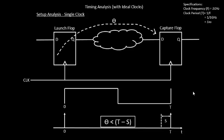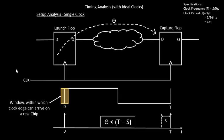Let's move on and bring in more practical scenarios. The next one we'll be talking about is something called jitter. This clock is created by a PLL — a phase-locked loop — or some clock source. That clock source is expected to send clock signals at exactly 0, T, and all those time periods. But the clock circuitry or PLL is built on real silicon with real wires, and it has some positive and negative variations.